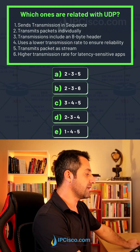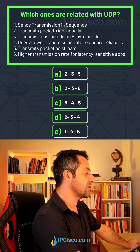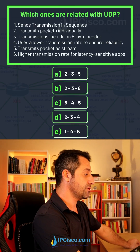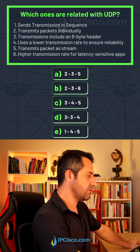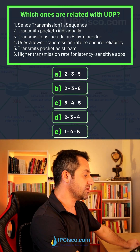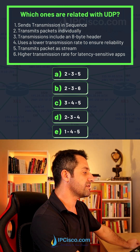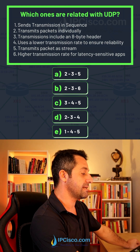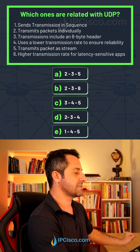Transmits packets individually. Transmission includes an 8-byte header. Uses lower transmission rate to ensure reliability. Transmits packets at stream. Higher transmission rate for latency-sensitive applications.